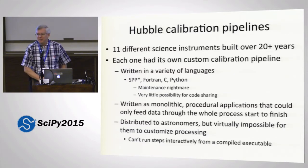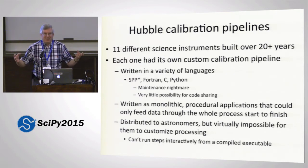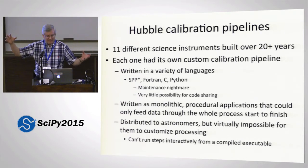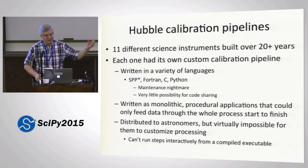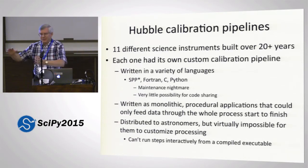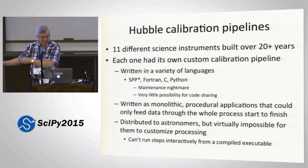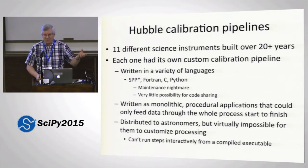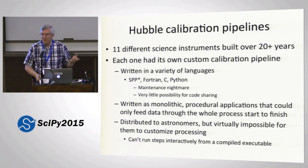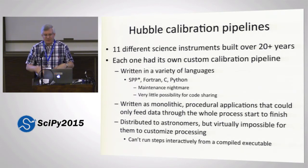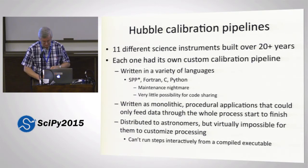There's almost no possibility of sharing code between the different pipelines. They were also written in a very monolithic way — a huge end-to-end procedure where data came in one end, went through 10 or 20 steps, and was written out at the other end. It was just one gigantic executable. That's okay for automated production, but astronomers often need to tweak the calibration for their own observations to get the most science out of it, and it's nearly impossible to do that with this type of design.